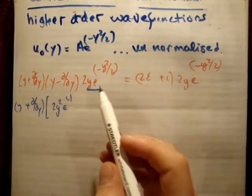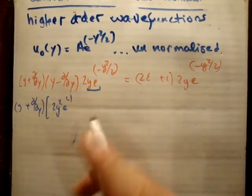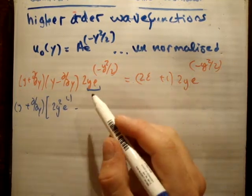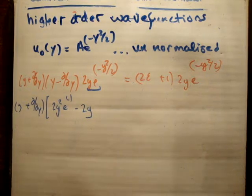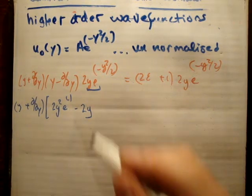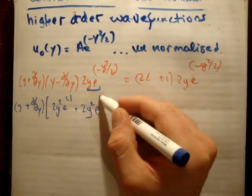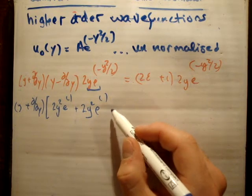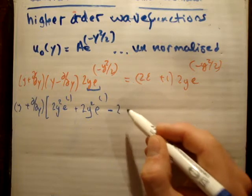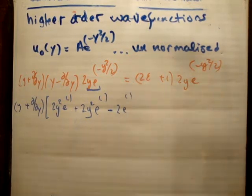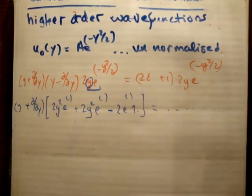Applying the product rule: d/dy of 2y e^(-y²/2) gives 2y·(-y)e^(-y²/2) plus 2·e^(-y²/2), which is -2y²e^(-y²/2) + 2e^(-y²/2). So after (y - d/dy), the result inside becomes 4y²e^(-y²/2) - 2e^(-y²/2), and we still need to apply (y + d/dy) to all of that.